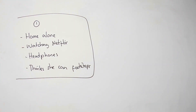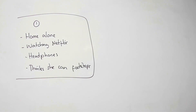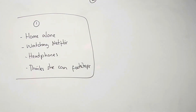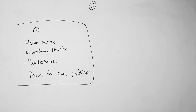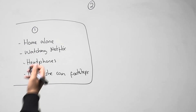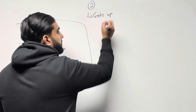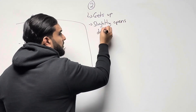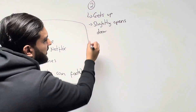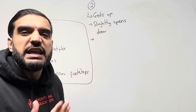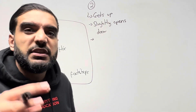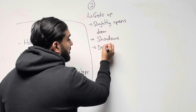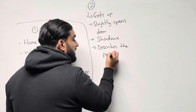Moving on to paragraph two — I think I've oversold the space on my board, I'm not sure how I'll fit all five paragraphs, but let's try. In paragraph two, the girl gets up and ever so slightly opens the door, just peeking outside. Her heart begins to beat — this is where you really sit and describe the fear. She sees shadows in her living room, and at this point all I want you to do is describe the fear she feels.